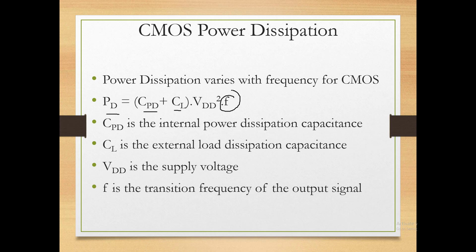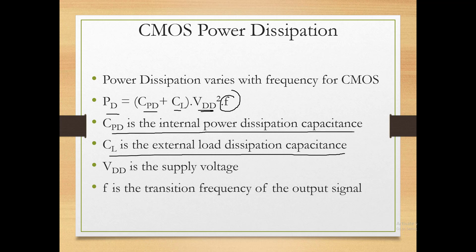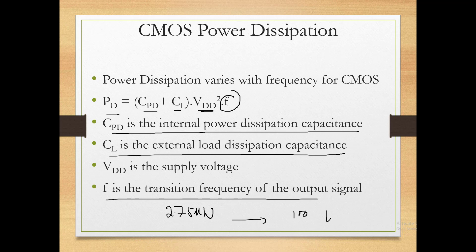The CMOS power dissipation formula is: P = (CPD + CL) × VDD² × F, where F is frequency, VDD is supply voltage, CL is external load capacitance, and CPD is internal power dissipation capacitance. Under normal (static) conditions, CMOS power dissipation is about 2.75 microwatts. As frequency increases, power dissipation also increases — at 100 kHz it becomes 170 microwatts.